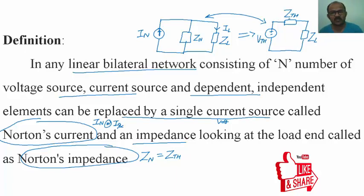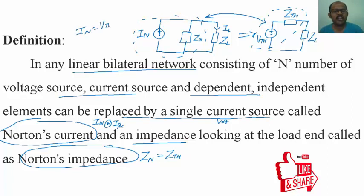In the case of source transformation, a practical voltage source can be replaced by a practical current source, where IN equals VTH divided by ZTH. Given a problem, you can solve it directly using the Thevenin circuit or the Norton circuit based on your comfort — just make sure you maintain accuracy and speed.